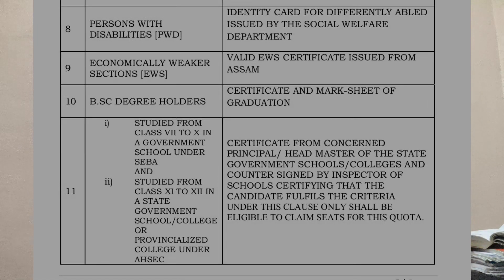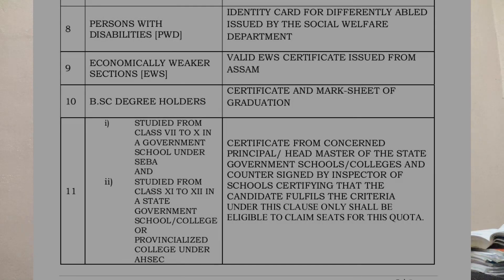Last year we had a 5% reservation for government school students — from class 7 to class 10 in government school, and studied from class 11 to 12 in a state government school, college, or provincial college under HSEC. Many questions came about how the CPS is applicable to these universities. If the state government school principal or headmaster is able to meet the authority, the principal headmaster is able to meet the inspector.